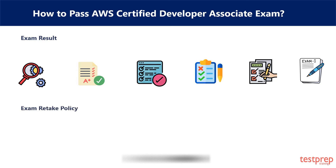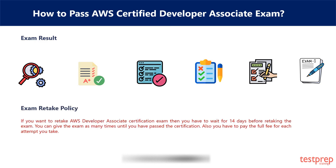Exam Retake Policy. If you want to retake the AWS Developer Associate Certification Exam, you have to wait 14 days before retaking it. You can give the exam as many times as needed until you have passed the certification. Also, you have to pay the full fee for each attempt you take.